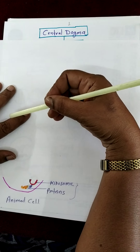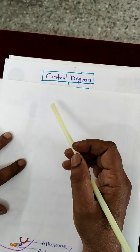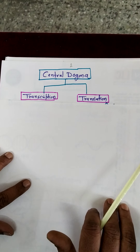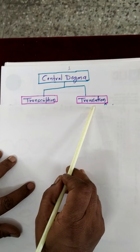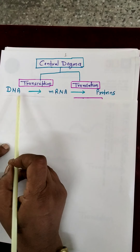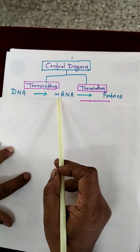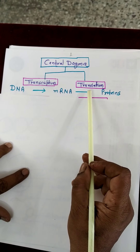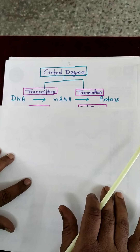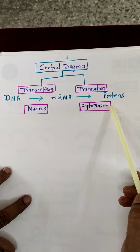Let's start with central dogma. Central dogma is the process in which proteins are synthesized in the cell. This process has two steps: transcription and translation. These two steps occur in the cell. In the transcription process, from DNA, mRNA is synthesized. And in the process of translation, from mRNA, proteins are synthesized. The process of transcription is carried out in the nucleus and the process of translation is carried out in the cytoplasm.